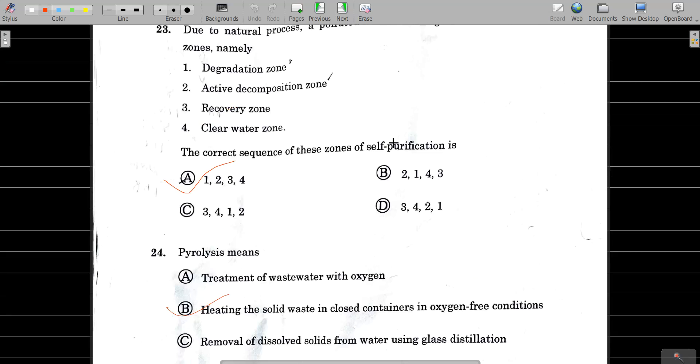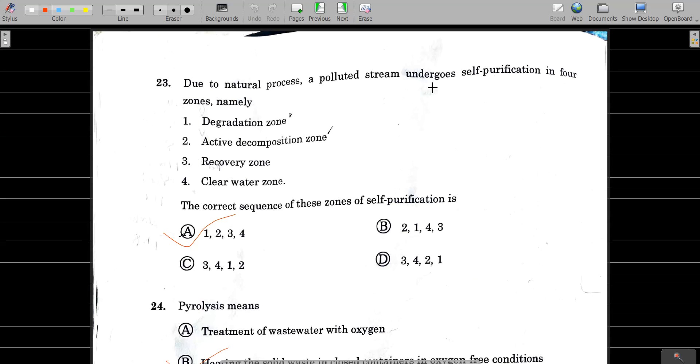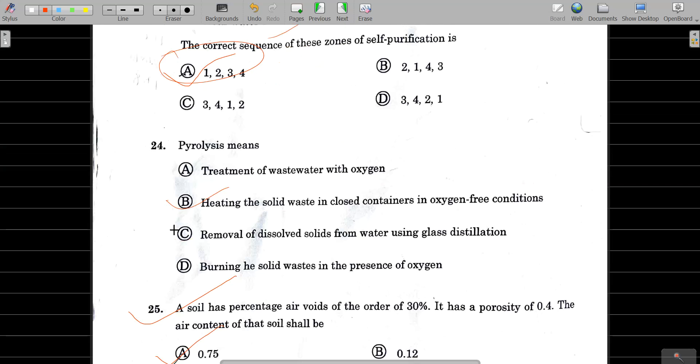Question number 23: Due to natural process, polluted system undergoes self-purification. The correct sequence is: degradation, then active decomposition, then recovery, then clear water. Question 24: Pyrolysis is the process where solid waste is in closed container in oxygen-free condition.